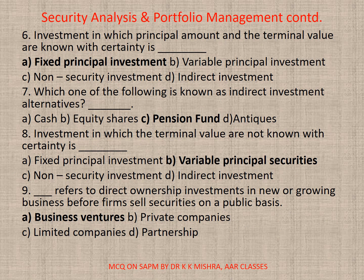Question 6: Investment in which the principal amount and terminal value are known with certainty is — correct option A: Fixed principal investment. Question 7: Which one of the following is known as indirect investment alternatives? Correct option is C. Question 8: Investment in which the terminal value is not known with certainty is — correct option: Variable principal securities. Question 9: Dash refers to direct ownership investments in new or growing business before firms sell securities on a public basis — correct option A: Business Ventures.